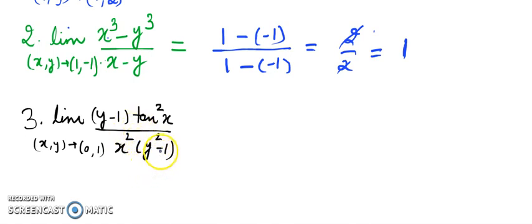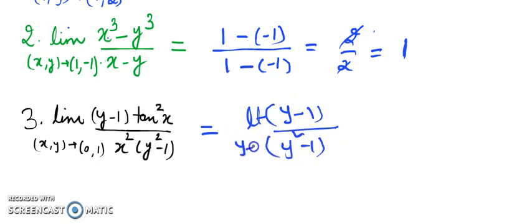In this case we can use a property we have seen—the product of two different limits. What we are going to do is whenever you see this kind of problem where the x function and y function can be separated, we can write it down. We can write limit (y-1)/(y²-1) as y→1, times limit tan²x/x² as x→0.